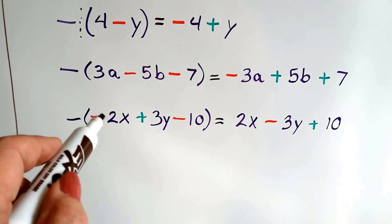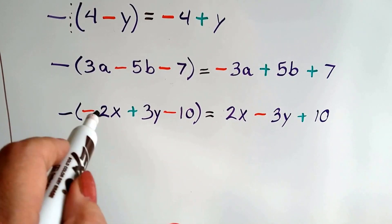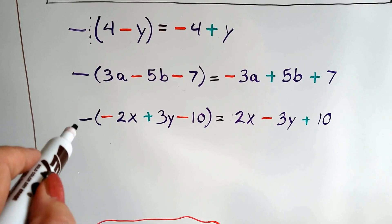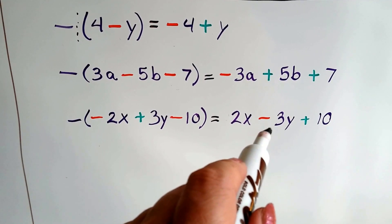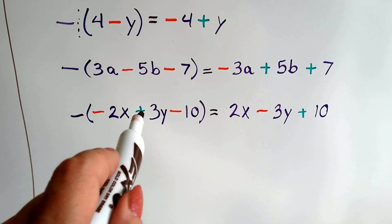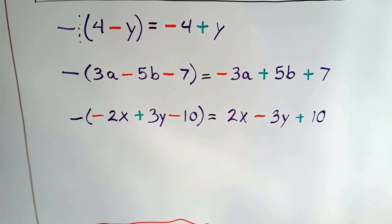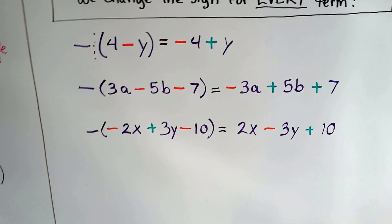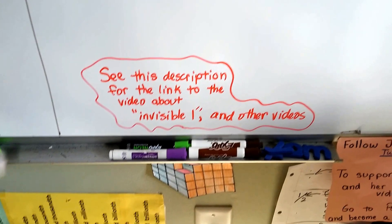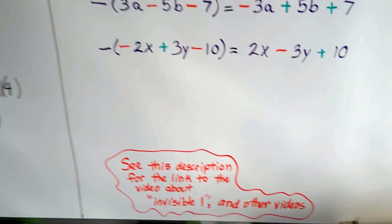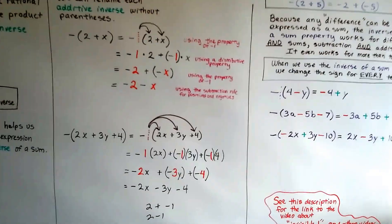Let's look at this one. We have a negative times a negative, which gives us positive 2x — it changes that sign to positive. Negative 1 times positive 3y — negative and positive make negative — so we get negative 3y. And negative 1 times negative 10 — two negatives — gives us positive 10. You can see the description in this video for a link about the invisible 1 and some other videos that might help you with working with parentheses and the distributive property.